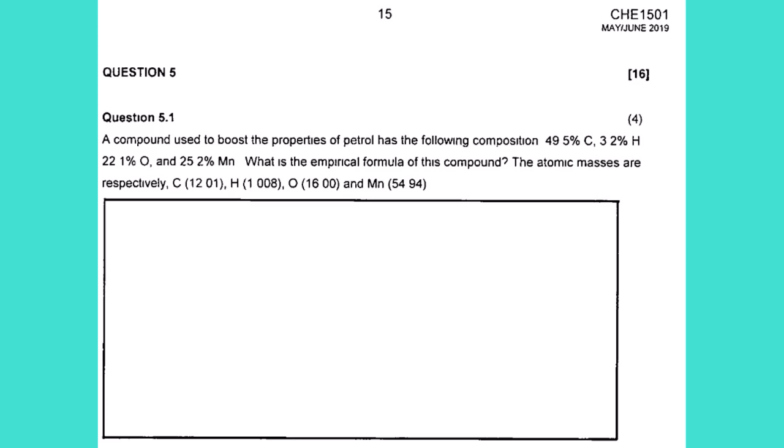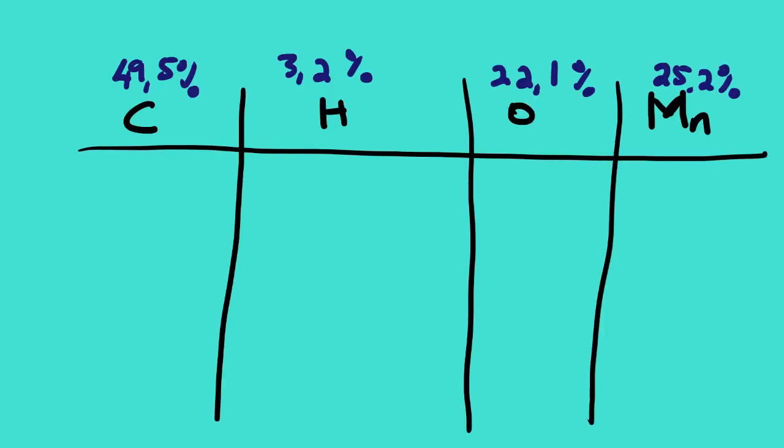The atomic masses are respectively: carbon is 12.01, hydrogen is 1.008, oxygen is 16.00, and manganese is 54.94. So we are actually calculating the empirical formula. Normally what I do, I tabulate my given data and put all the percentages, then from there I start calculating.